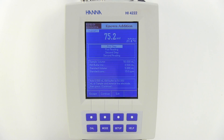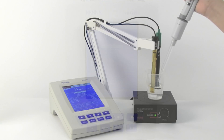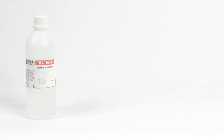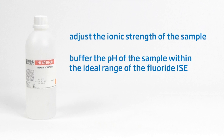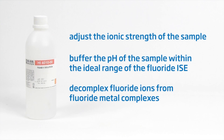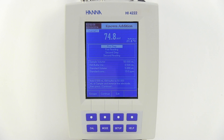Add 0.5 mils of HI4010-00 TSAB solution. The addition of TSAB to the samples serves three purposes: to adjust the ionic strength of the sample, to buffer the pH of the sample within the ideal range of the fluoride ISE, and to decomplex fluoride ions from fluoride metal complexes, ensuring they are free in solution and able to be measured. Once added, press Continue.